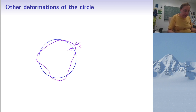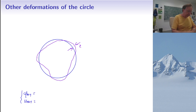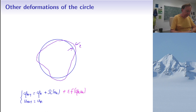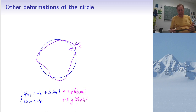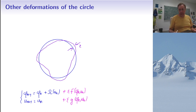Deforming the circle to an ellipse is a rather special case. More generally we could deform the circle in a more complicated smooth way — some oscillation around the circle — with a maximum deformation that is small, some parameter ε. In this case we still have a map φₙ₊₁ and uₙ₊₁ that looks like the previous map, but with additional terms of the form ε·f(φₙ, uₙ) and ε·g(φₙ, uₙ).